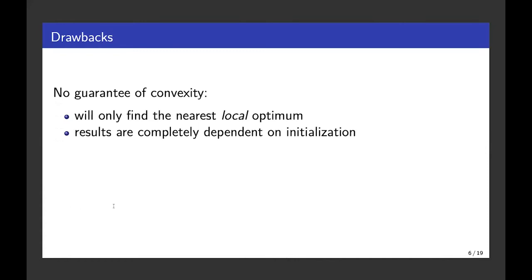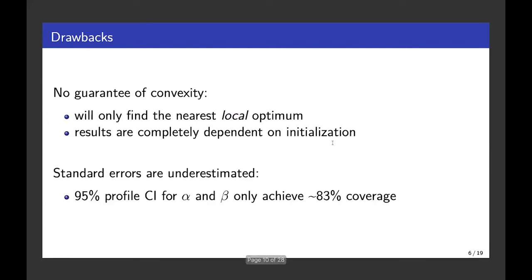But there's a couple of drawbacks. One is that it's very hard to know if you have a convex optimization problem or not. And so your algorithm might only be giving you the nearest local optimum of the function. And so the results that you get are going to be completely dependent on the initial values that you use to start the algorithm off. The other issue and the main issue that I'll be concerned with in this talk is that those standard errors are systematically underestimated. So if we want to build confidence intervals for alpha and beta, those parameters, then our 95% CIs in a simulation study are only achieving about 83% coverage of those true parameter values.